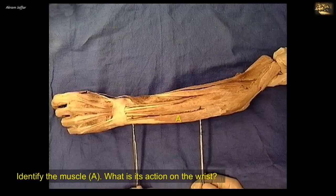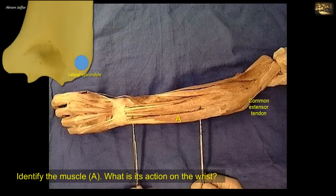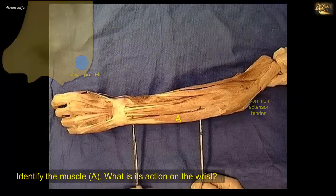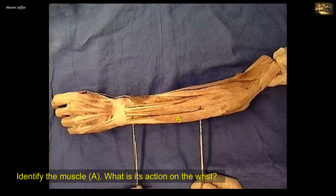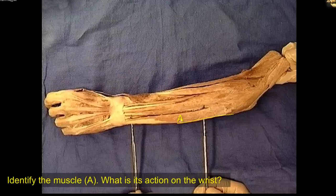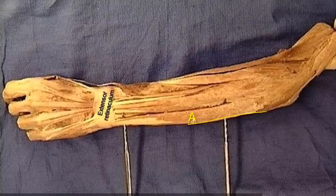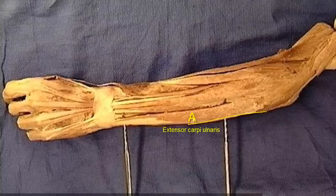Identify the muscle A. What is its action on the wrist? This is the most medial of the muscles of the extensor compartment of the forearm. Note that it arises from the common extensor tendon and the lateral humeral epicondyle. However, it has an additional aponeurotic origin from the subcutaneous border of the ulna. Follow the muscle distally: it passes deep to the extensor retinaculum and is inserted into the metacarpal bones. This is the extensor carpi ulnaris muscle, and it is inserted into the base of the 5th metacarpal bone.